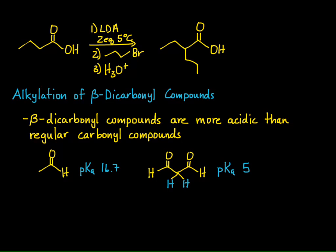We can do this with a beta-dialdehyde, or a beta-diketone. With a beta-diketone, we're talking about the alpha-hydrogens in the middle. The outside alpha-hydrogens have pKa values in the high teens, but the ones in the middle have a much higher acidity, with a pKa of about 9.